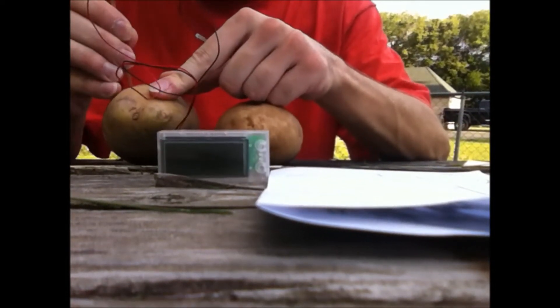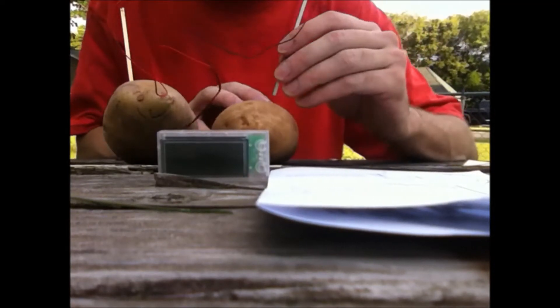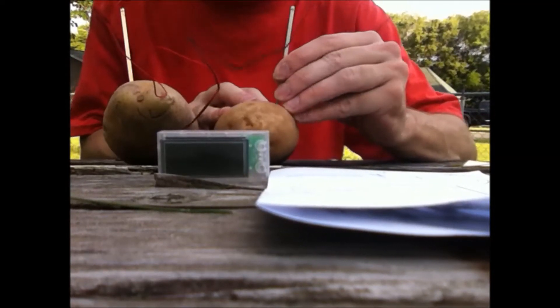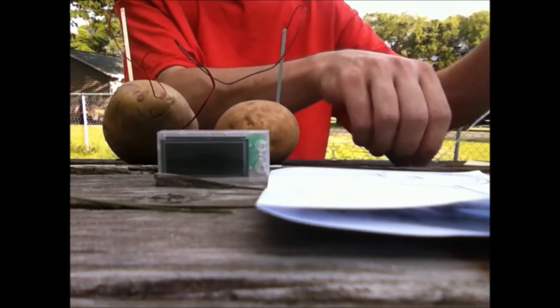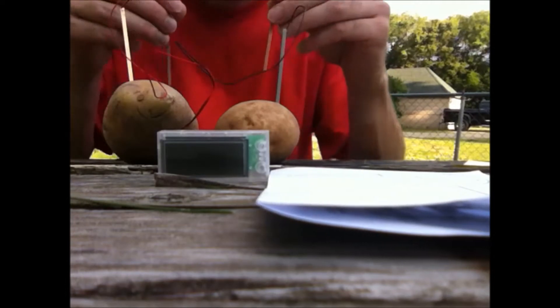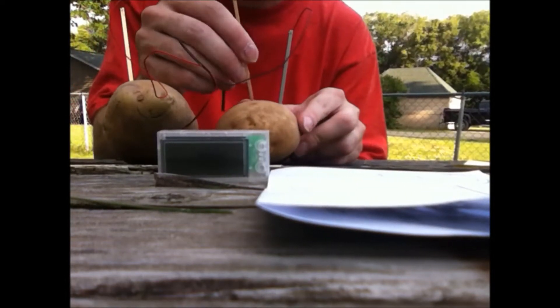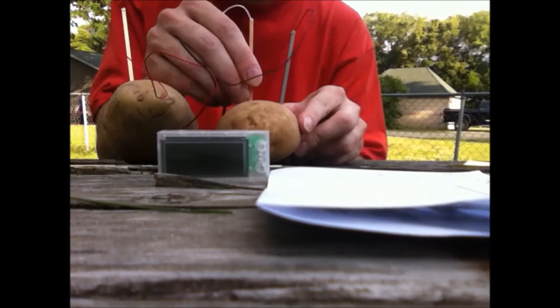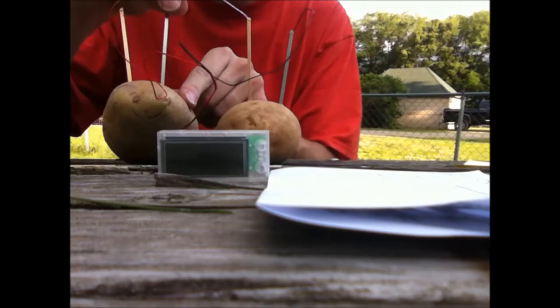We stick one side of the copper into the potato and we stick the zinc in the other. Now we need a path between the two. We put the copper on this side of the potato and then zinc next to the copper on the other side.